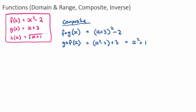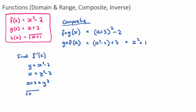To find the inverse of f(x), written as f⁻¹(x), first write the function as y = x² - 2. The first step is to swap x and y, giving x = y² - 2. Then use algebra to make y the subject: add 2 to both sides to get x + 2 = y², then square root both sides to get y = √(x + 2). This is the inverse function, so f⁻¹(x) = √(x + 2).